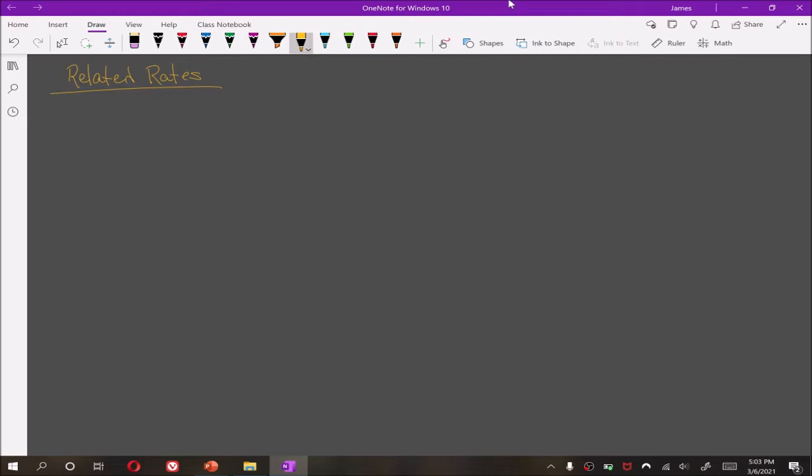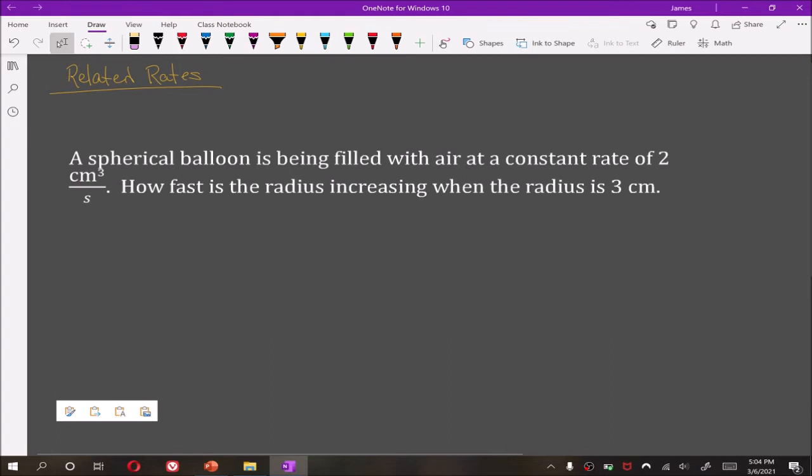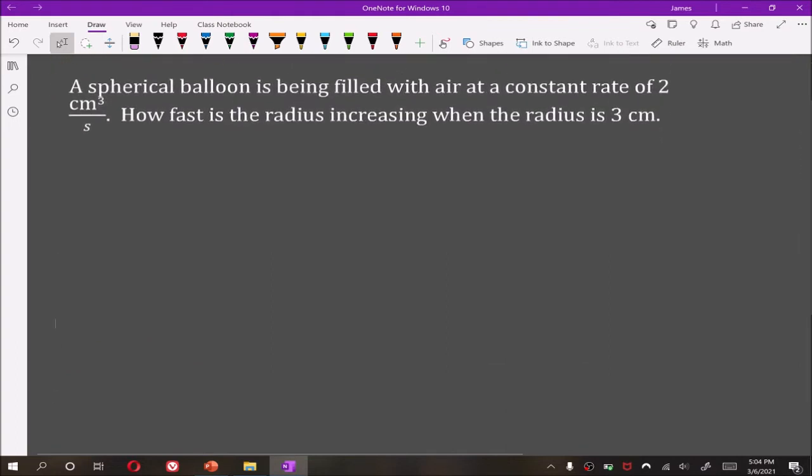In this video, we're going to only be looking at examples. We will look at several related rates problems. For our first example, consider a spherical balloon being filled with air at a constant rate of 2 cubic centimeters per second. We are asked to determine how fast the radius is increasing when the radius is 3 centimeters.